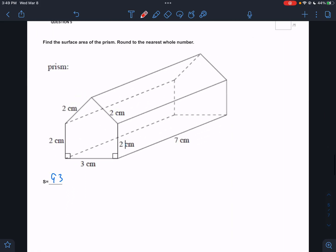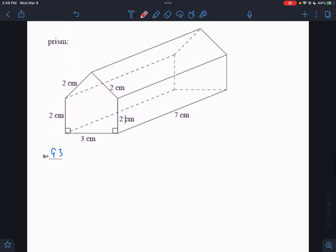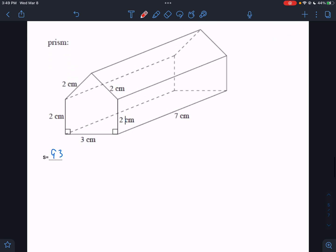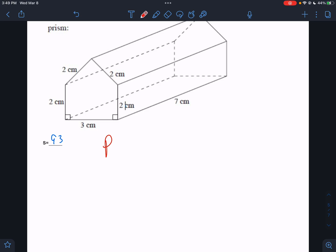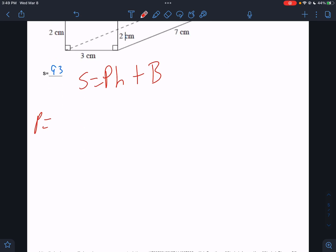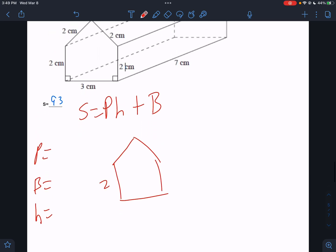Find the surface area of the prism. So I would treat this like a big prism. I would do the perimeter of the base. So the surface area equals the perimeter of the base times the height plus the area of the base. So we need P, B, and H. The base is this shape, where we have 2, 2, 3, 2, and 2.